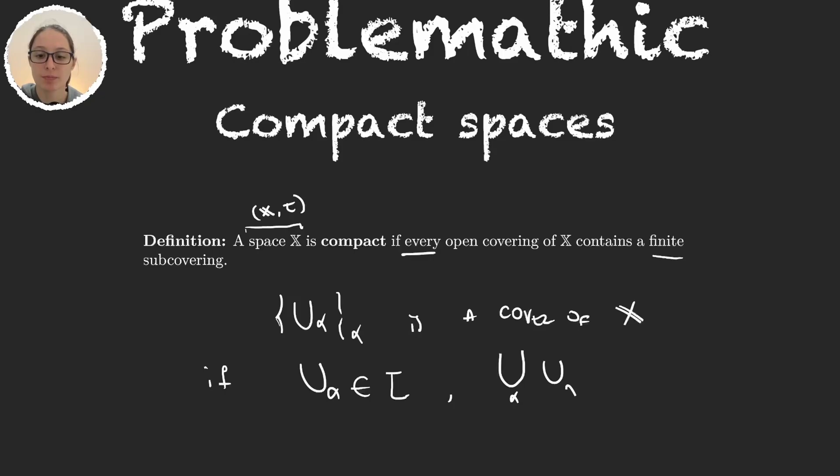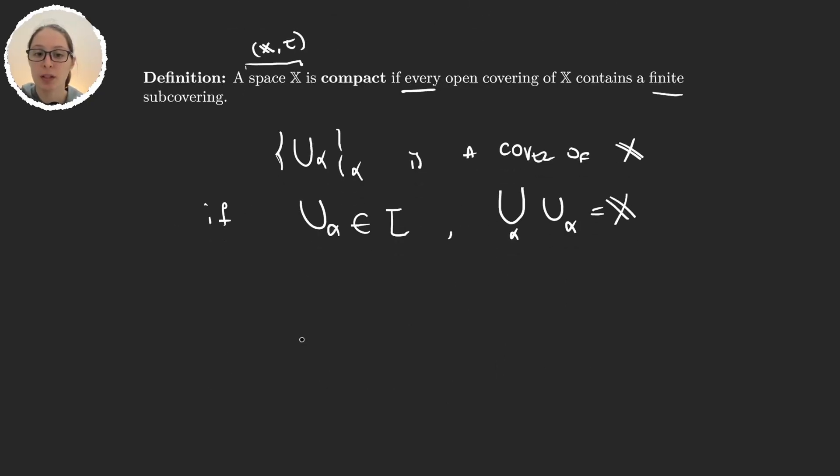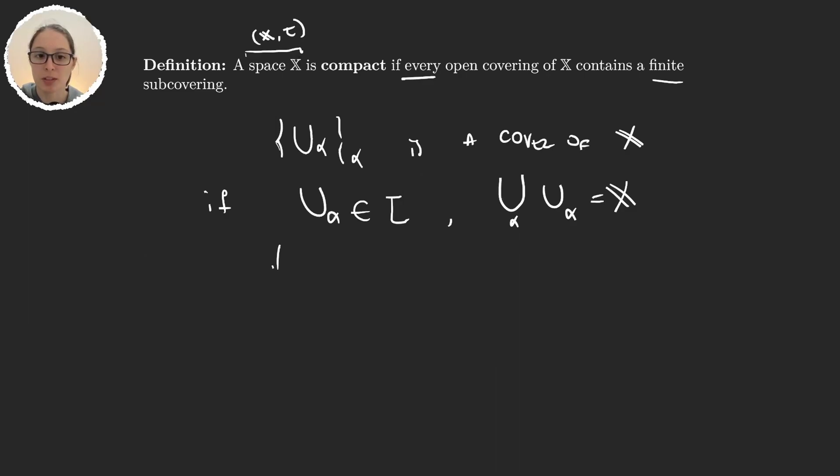So we have any covering of X, and if we can find from this covering, if there exists a finite one—so we can just take some U_n's from n equals 1 up to m, so all these sets are in the original covering, such that X is equal to the union of them—then we say that X is compact.